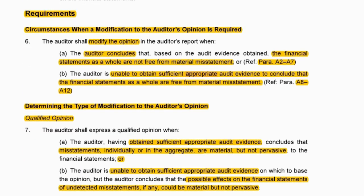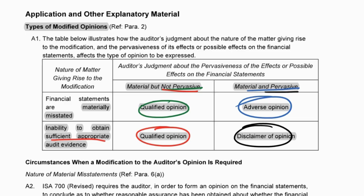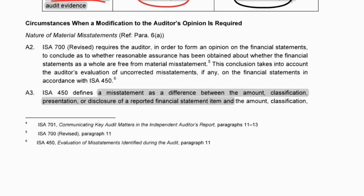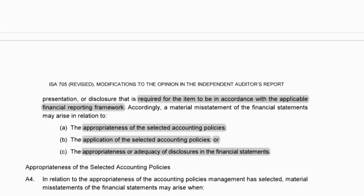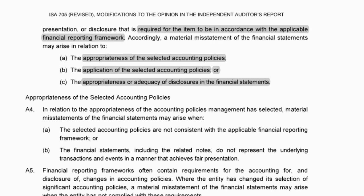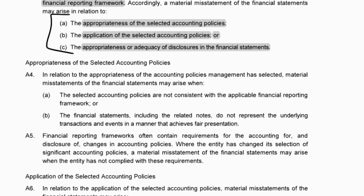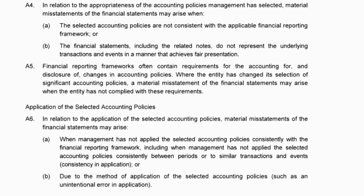The auditor will modify the opinion if the financials are not free from material misstatements, or if sufficient evidence could not be obtained to confirm they are free from material misstatements. Paragraph A3 defines misstatements as differences in amounts, presentation, classification, and so on. Qualitative misstatements could include inappropriate accounting policies or inadequate disclosures.